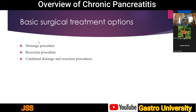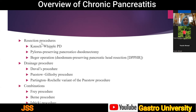The basic surgical options for treating these patients are: drainage procedures — where the pancreatic duct is opened, all strictures cleared and stones removed, and anastomosed to a Roux-en-Y jejunal limb; resection of part of the pancreas, usually the head; or a combination of drainage and resection. Resectional procedures include the classic Whipple pancreaticoduodenectomy, pylorus-preserving pancreaticoduodenectomy, or the Beger operation with duodenum-preserving pancreatic head resection. Drainage procedures evolved from the Duval procedure to the Puestow procedure and then Partington-Rochelle's modification.